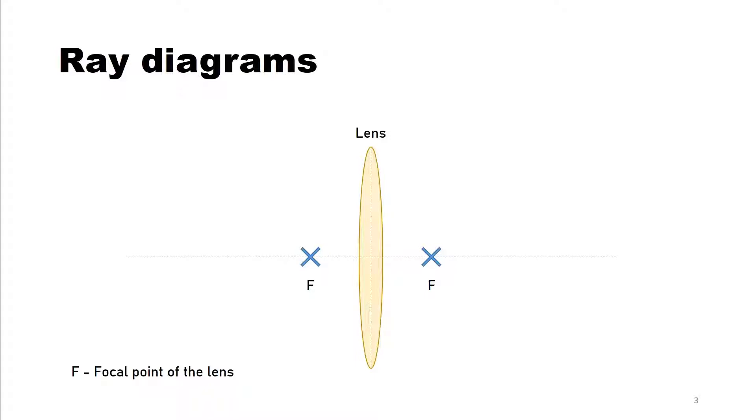And to understand how a lens creates an image from an object, we can draw a ray diagram. That is pretty simple to do, and it's always the same procedure, so I really want you to remember the steps.